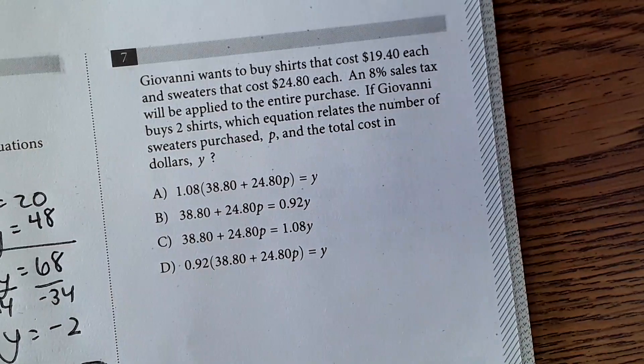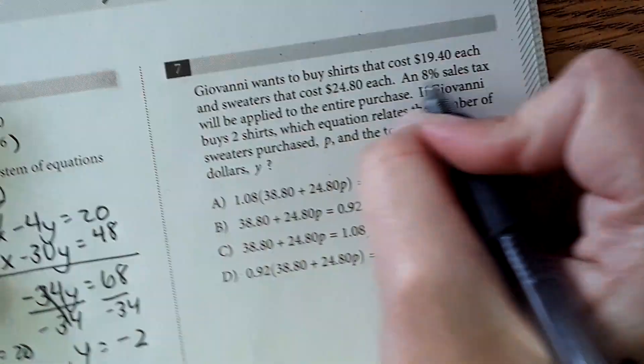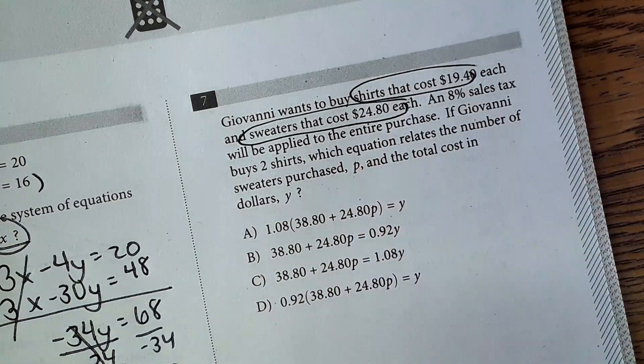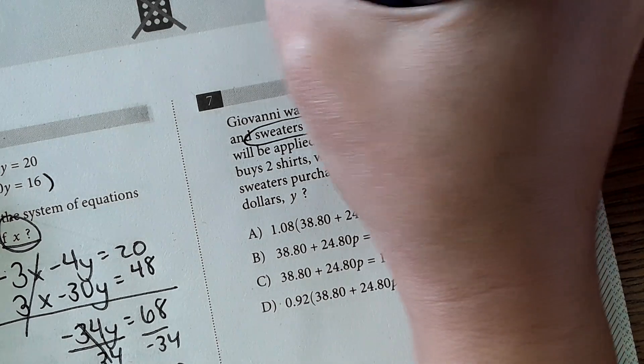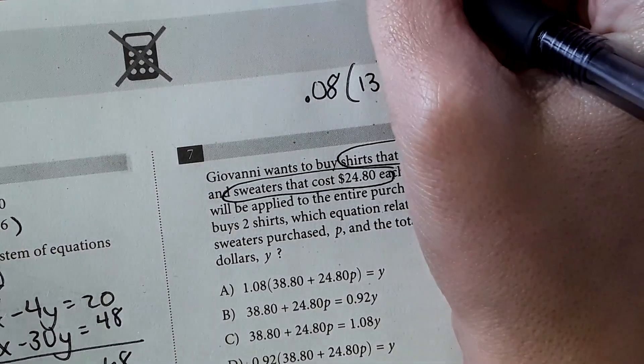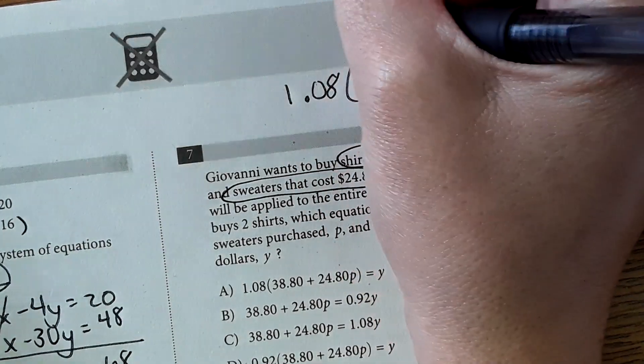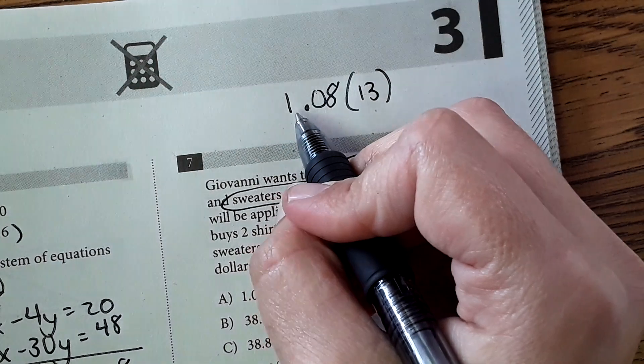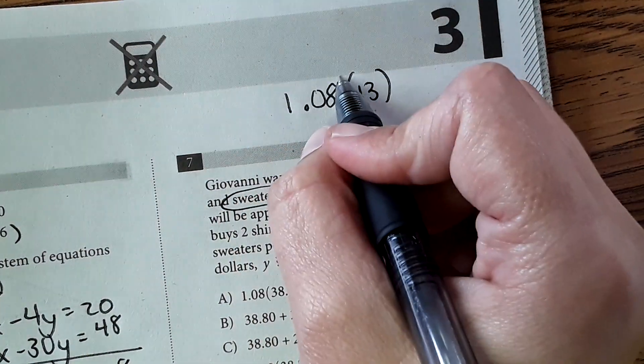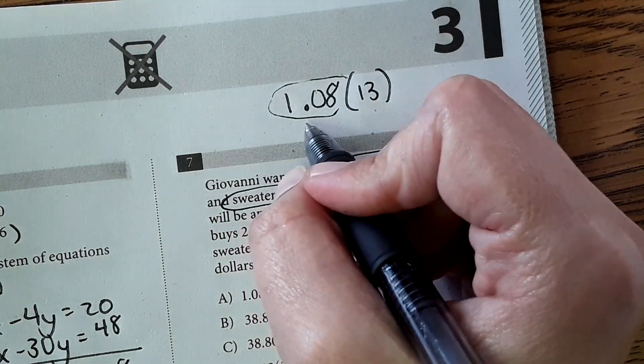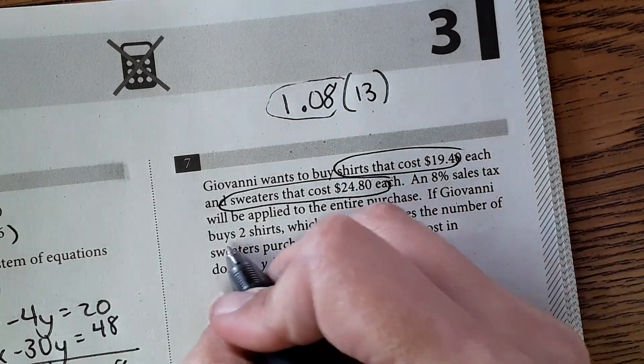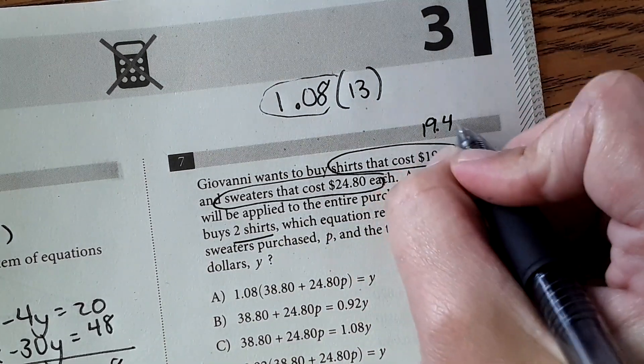Now number seven over here, Giovanni wants to buy a shirt that costs $19.40 each and sweaters that cost $24.80. So the shirts are $19.40, sweaters are $24.80. Great. An 8% sales tax will be applied to the entire purchase. Okay, when we have 8% sales tax, if you were to take 0.08 and multiply it by the cost of a shirt, let's say $13, you would get the tax on that shirt. But there's actually a little hack here. If you put 1.08, not only do you find the tax on the $13, but you automatically add that $13 into it. So 1 times 13 is going to be 13, and then you're adding the 8% as you calculate it. So when you see 1.08, that is referring to the sales tax. It's 1 times the cost plus the 8% sales tax.